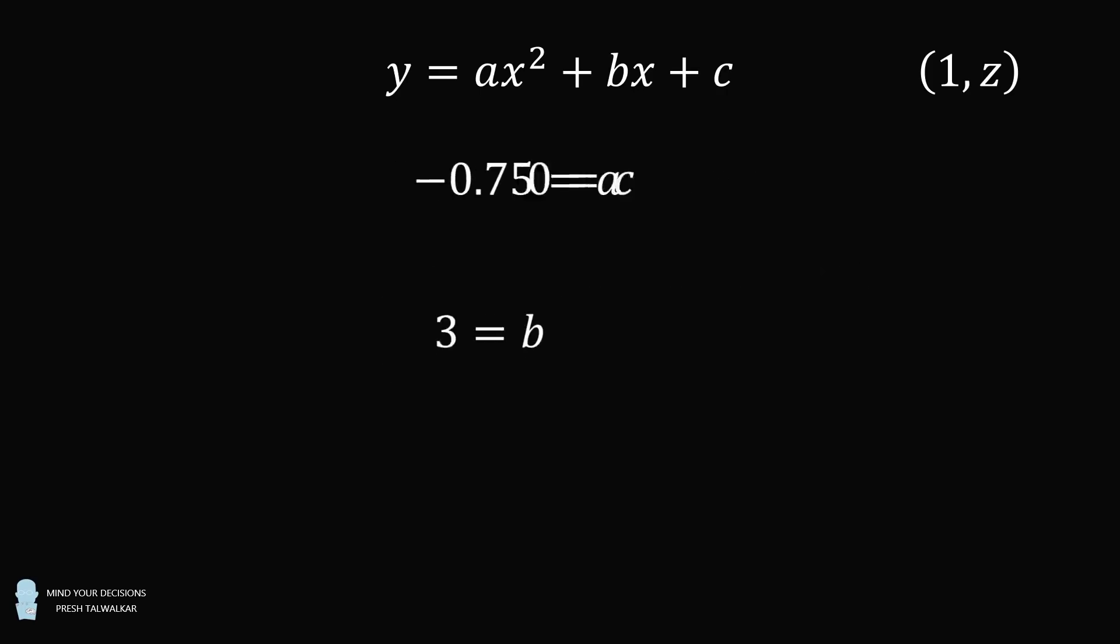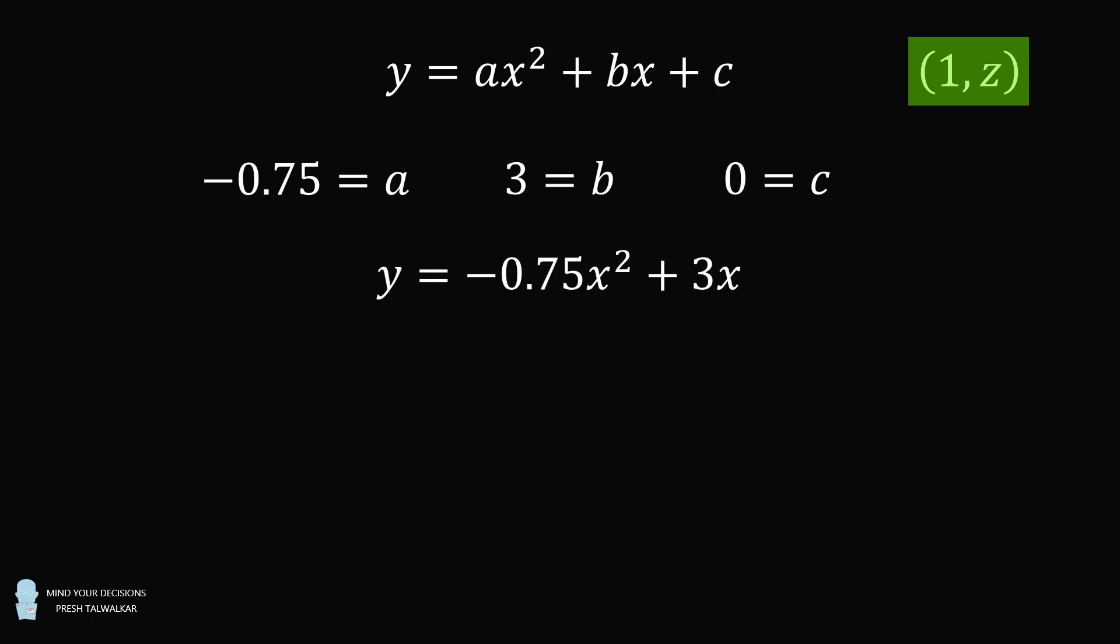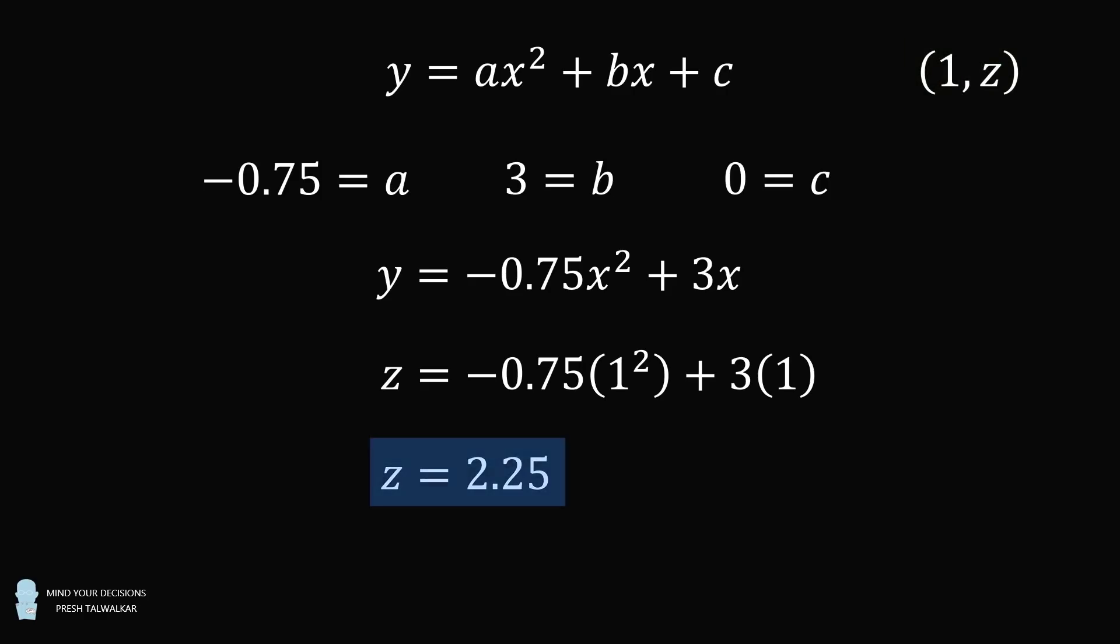So we've now solved for a, b, and c. We can substitute into our equation for the parabola. And then we want to solve for z. So we substitute that x is equal to 1, and then we simplify. We again get that z is equal to 2.25. And that's the answer.